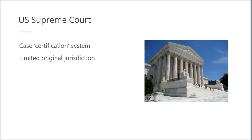However, the Supreme Court also has original jurisdiction over certain cases — that is, some cases may be immediately tried before the Supreme Court without having to go through the state or federal courts first. Examples of this include lawsuits between two or more states, and cases involving ambassadors and other public ministers.